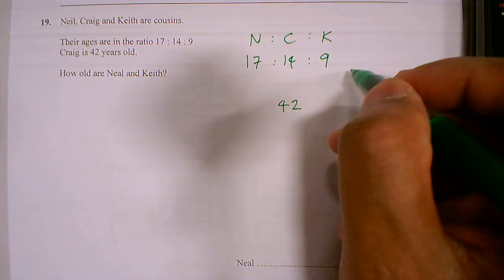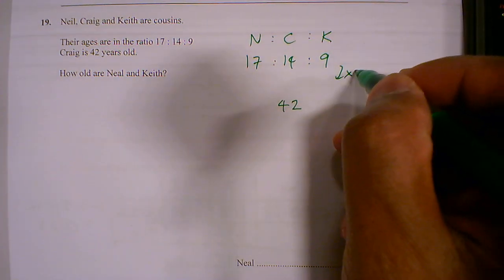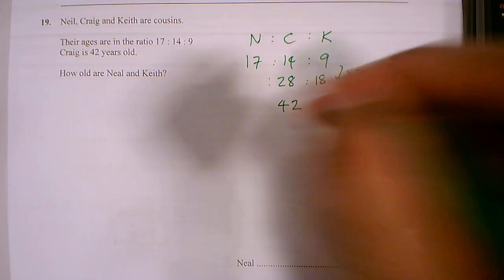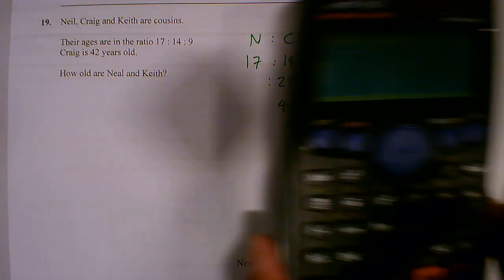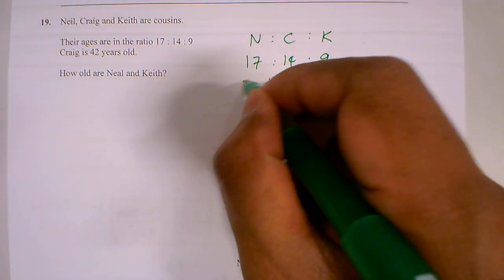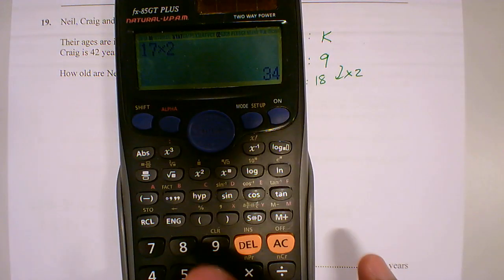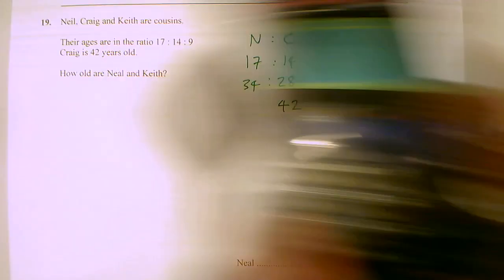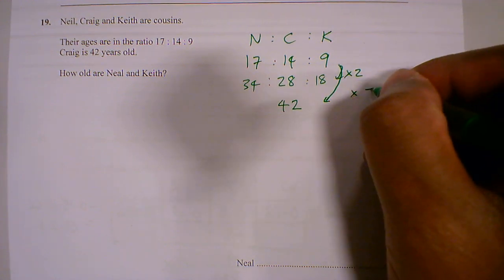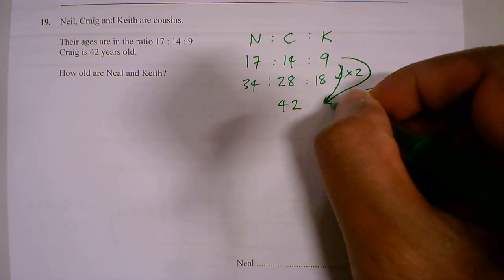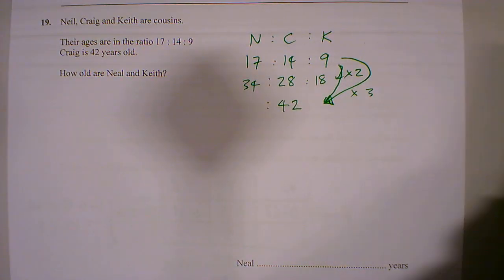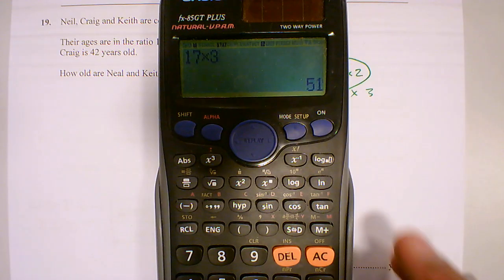If you like I'm doubling. If I times this by 2, 28, 18, and 17 times by 2 is 34. And I can also times by 3. 14 times by 3 gives me 42. Should make that clear actually. So 17 times by 3 gives me 51.